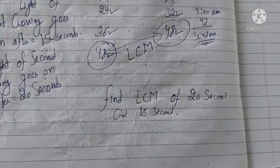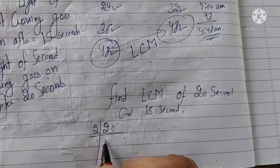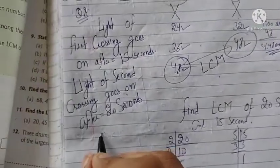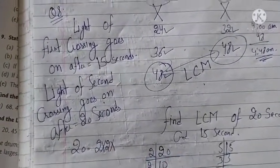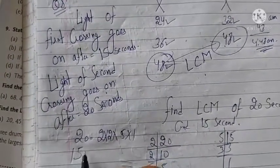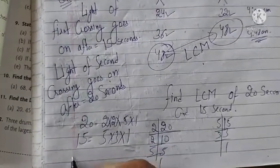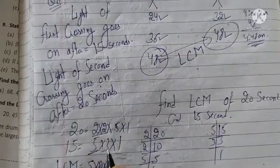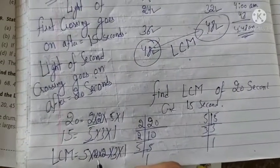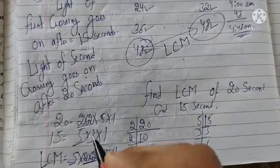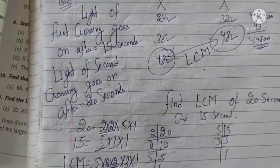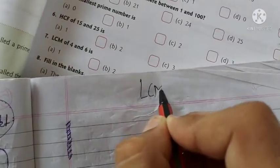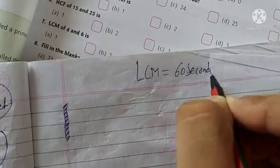Finding the LCM is easy. Find the prime factors of 20: 2 × 2 × 5 × 1. Find the prime factors of 15: 5 × 3 × 1. For LCM, take every factor with the maximum number of times it appears in either number. So we take 2 × 2 × 5 × 3 = 20 × 3 = 60 seconds. The LCM is 60 seconds, which equals 1 minute.